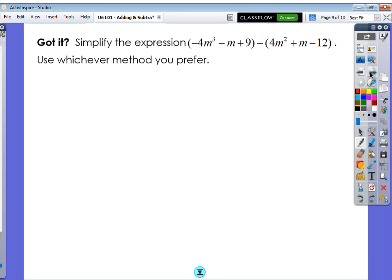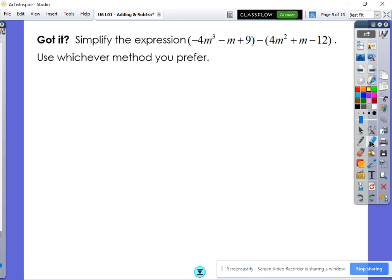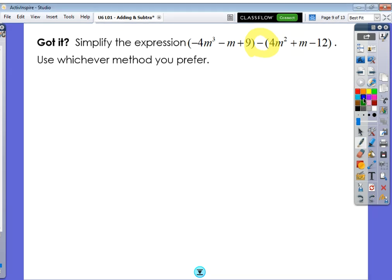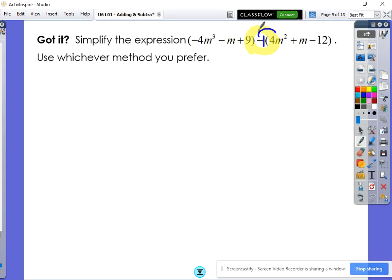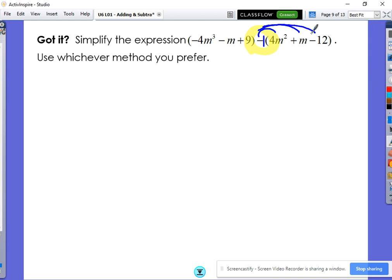So let's give it a quick shot here. Go ahead and use whichever method you prefer. But remember to set this up first right here. Press pause and give that a shot. All right, if we distribute this negative 1 correctly, we now end up with, I'm going to go with the horizontal method.